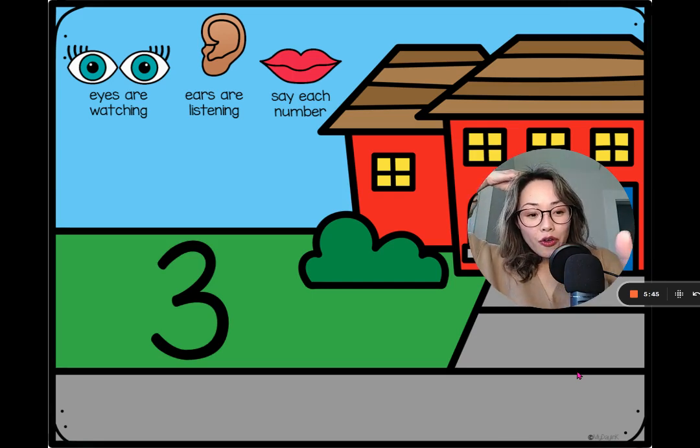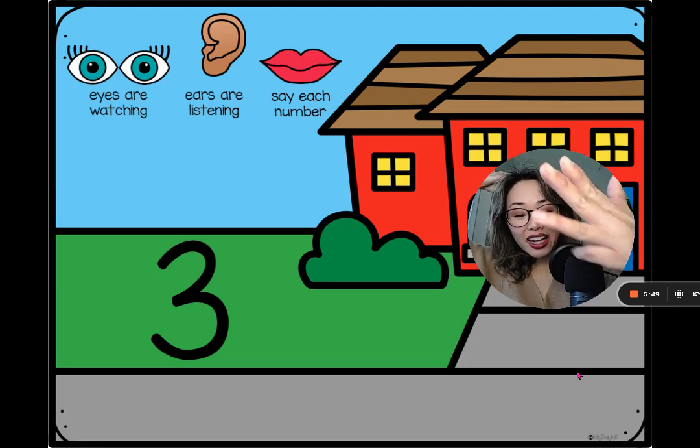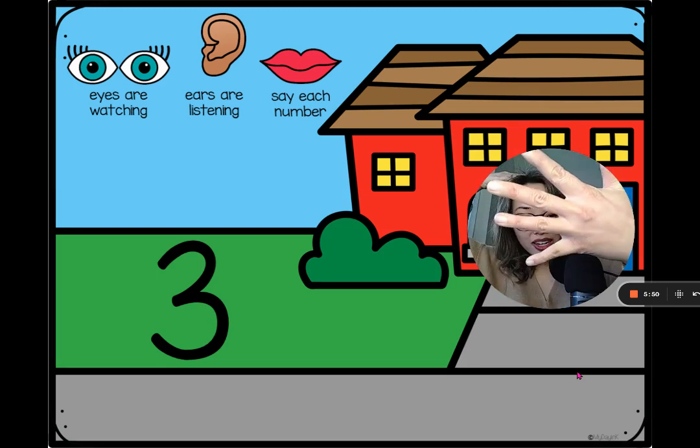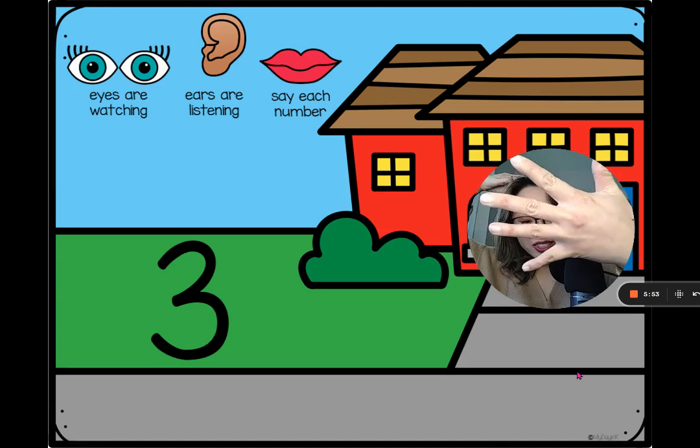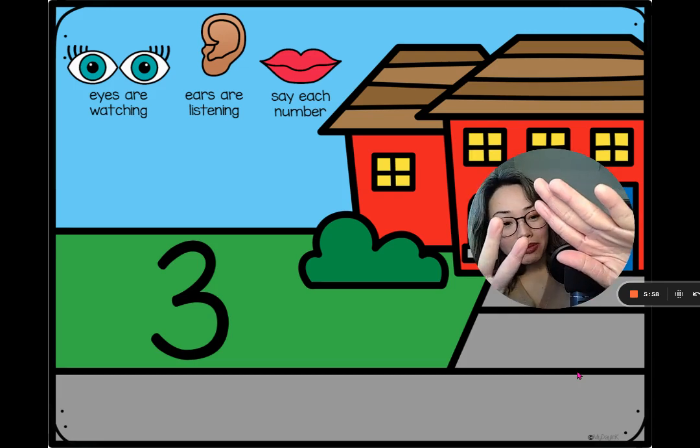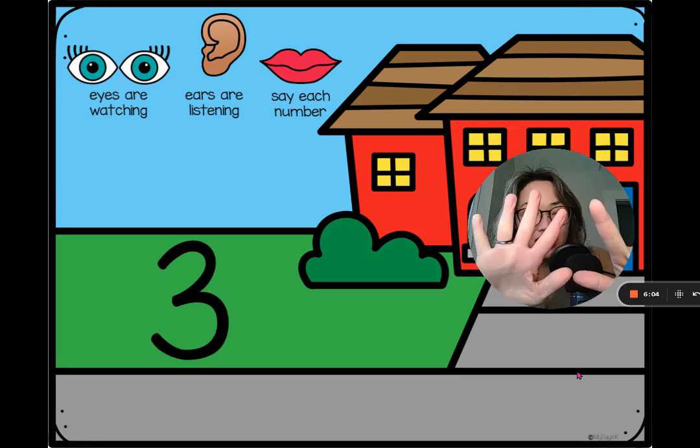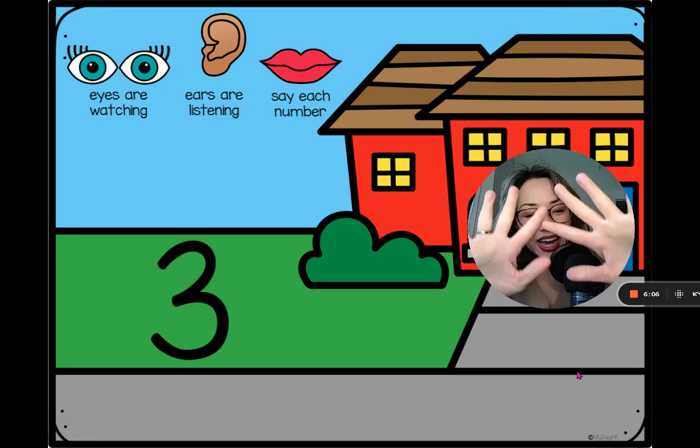So three, four, five, six, seven, eight. Oh no, we're not at ten yet. We need more fingers. Eight, nine, ten. So how many more did we count up to ten? Seven. So three and seven are partners to make ten.